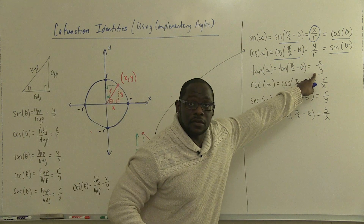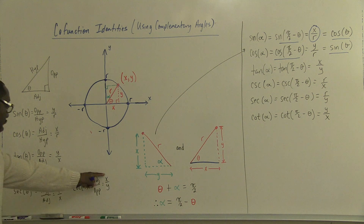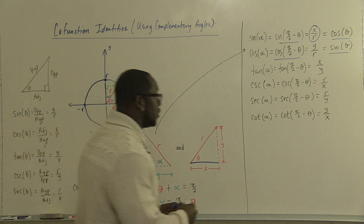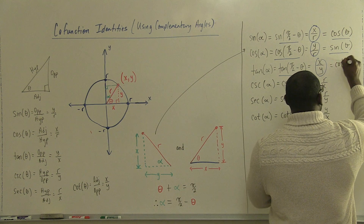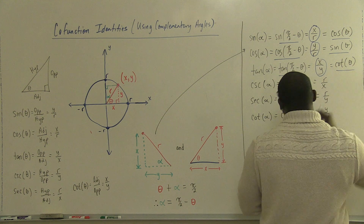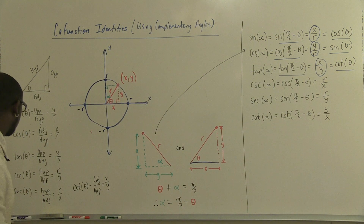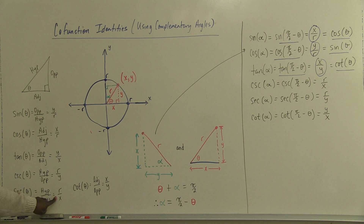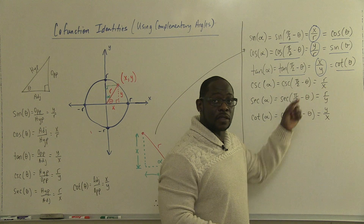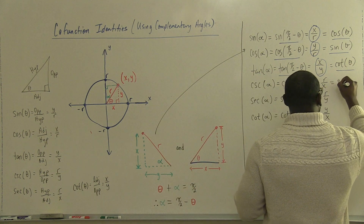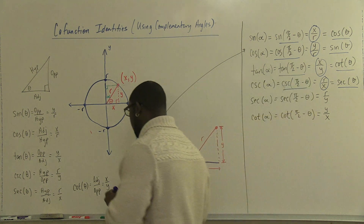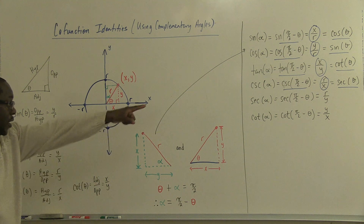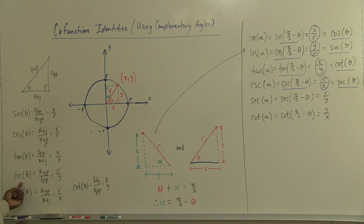Next, x divided by y is the same as cotangent, so tangent of pi over 2 minus theta equals cotangent theta. Then r divided by x — secant theta — must go with cosecant alpha, so cosecant of pi over 2 minus theta equals secant theta. And for r over y, that is cosecant, so secant of pi over 2 minus theta equals cosecant theta.